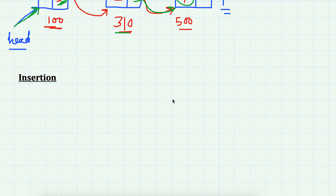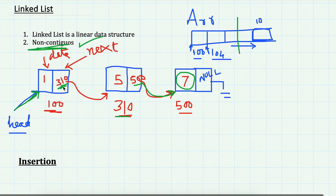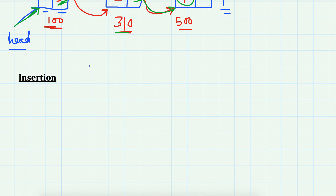In this video we are going to learn about the first operation on linked list — inserting data into the linked list. In the last video we saw a brief introduction of linked list: it's composed of a node where the first part is data and the second part is the pointer to the next node. When we insert data, whenever we are given a linked list we are given a reference to the first node, which we call the head node. Initially we don't have any node, so head is pointing to nil.